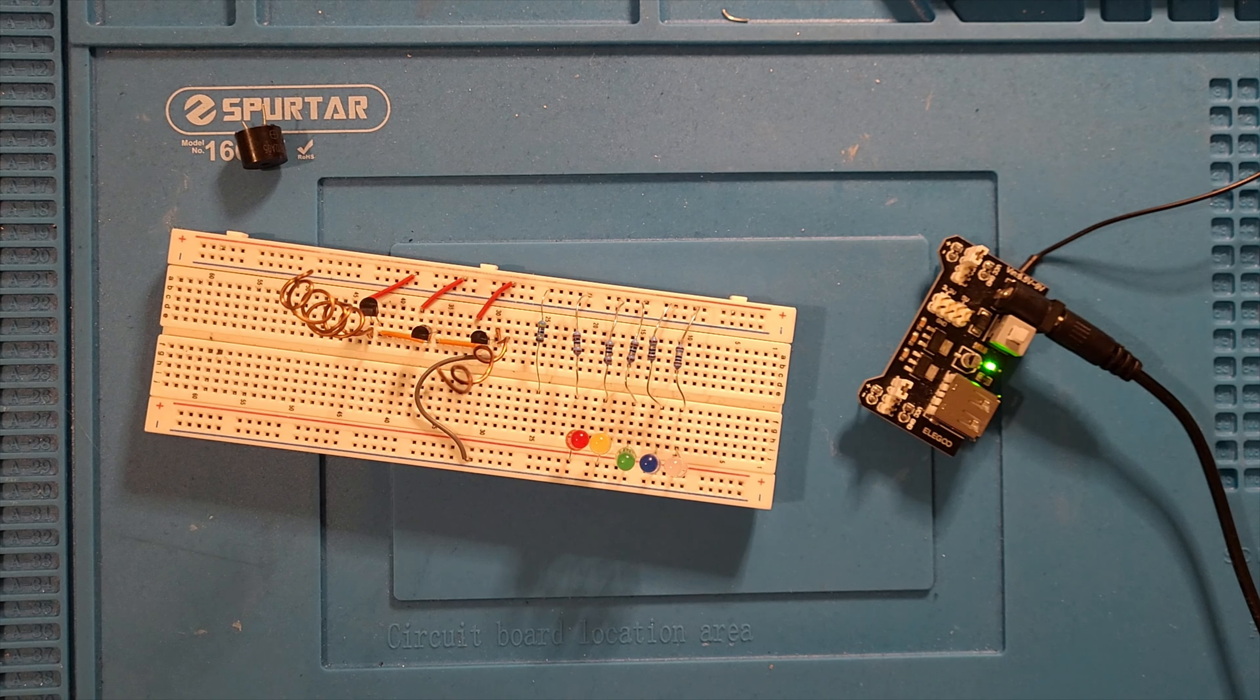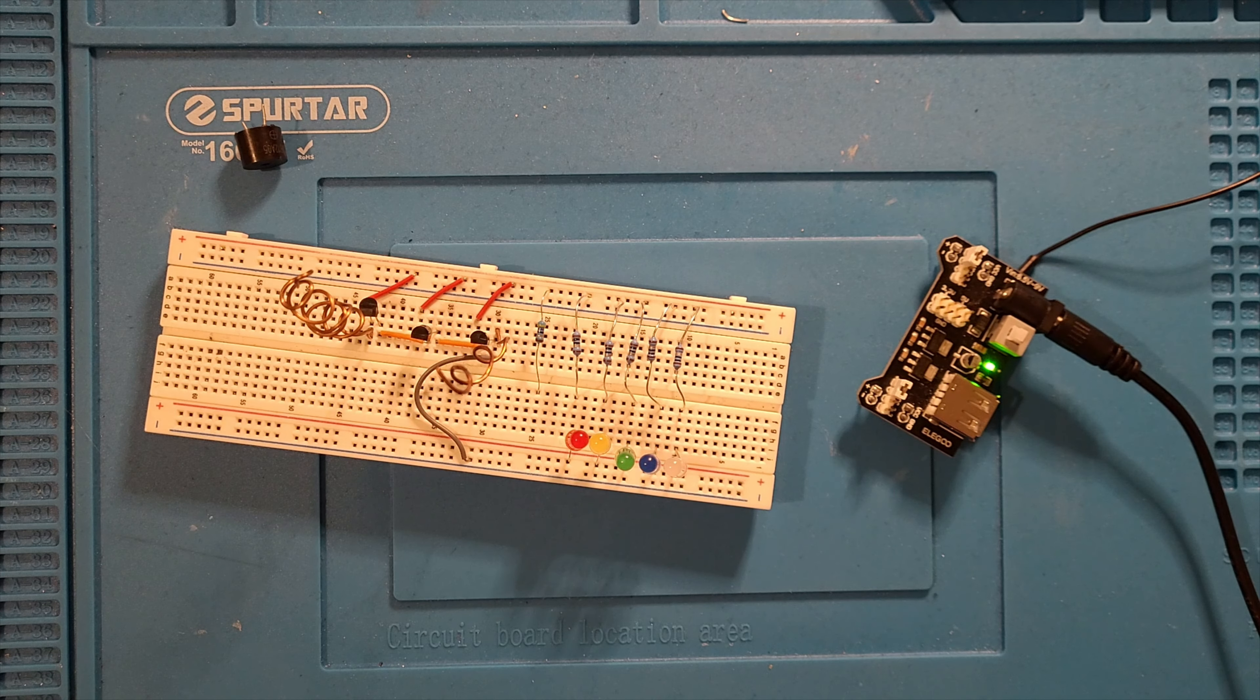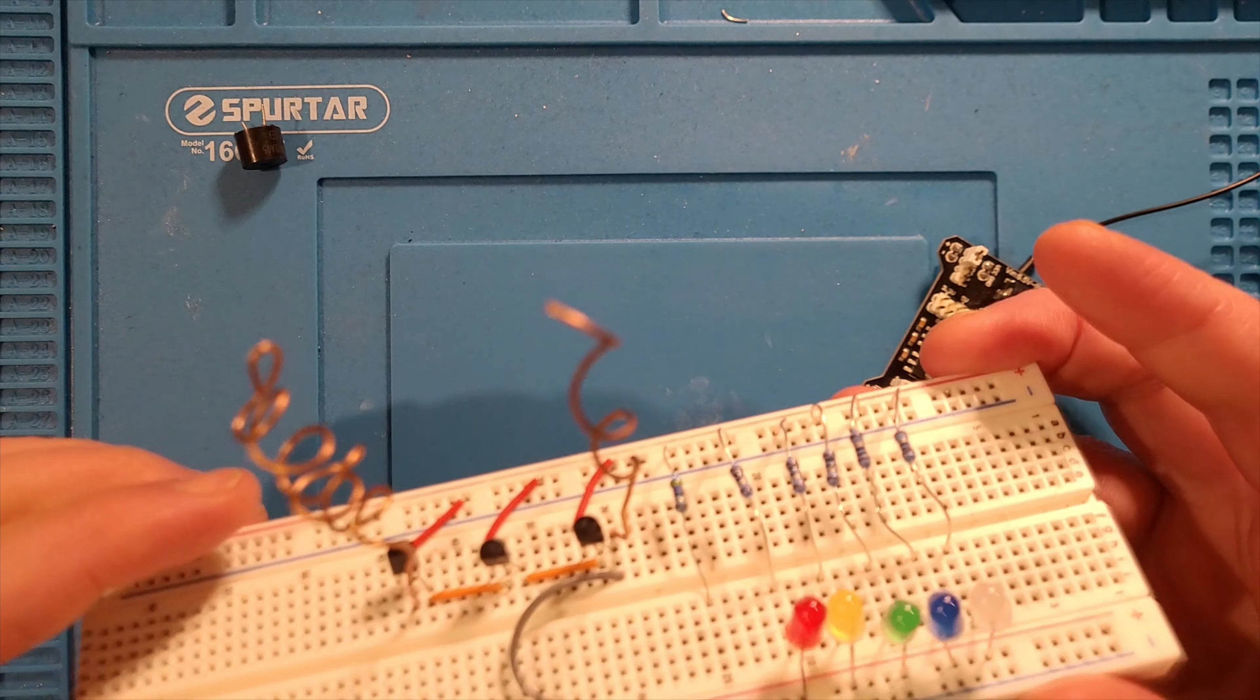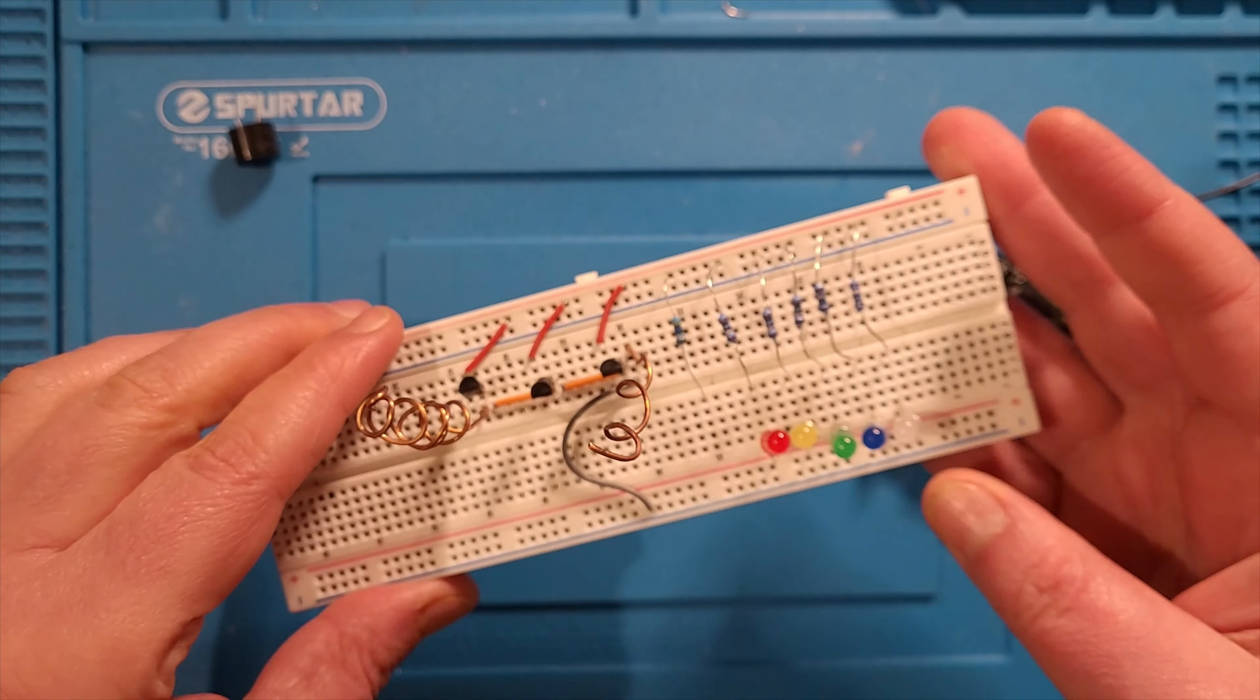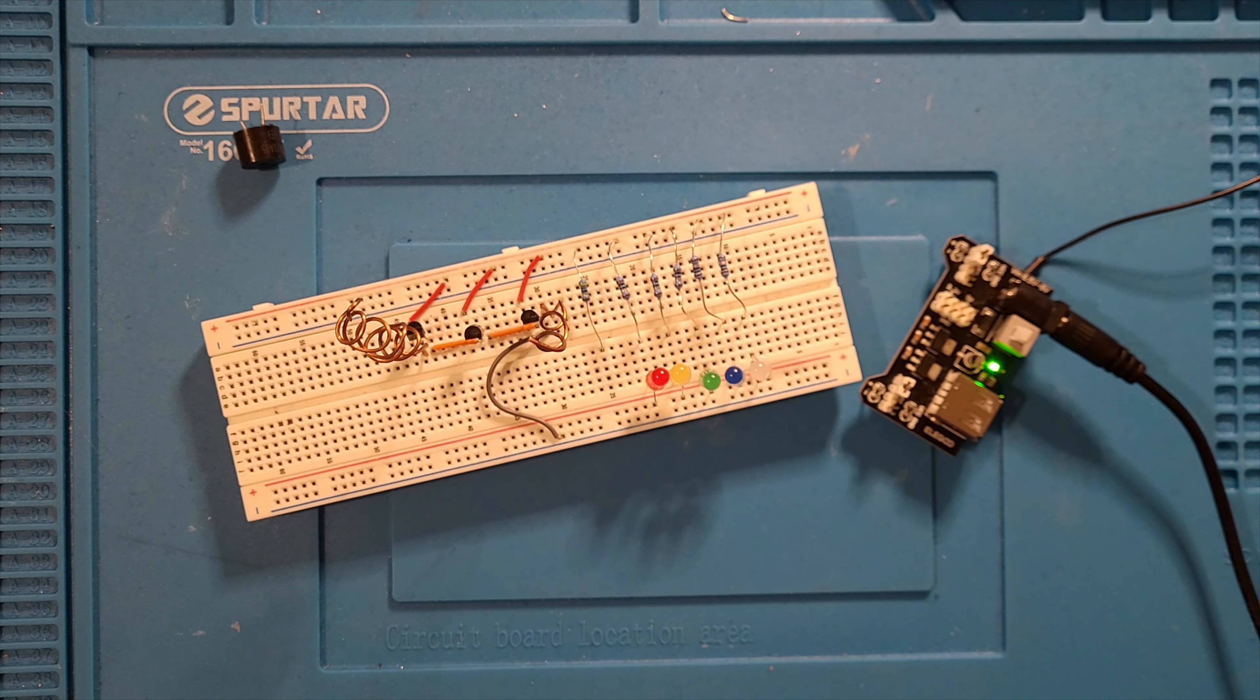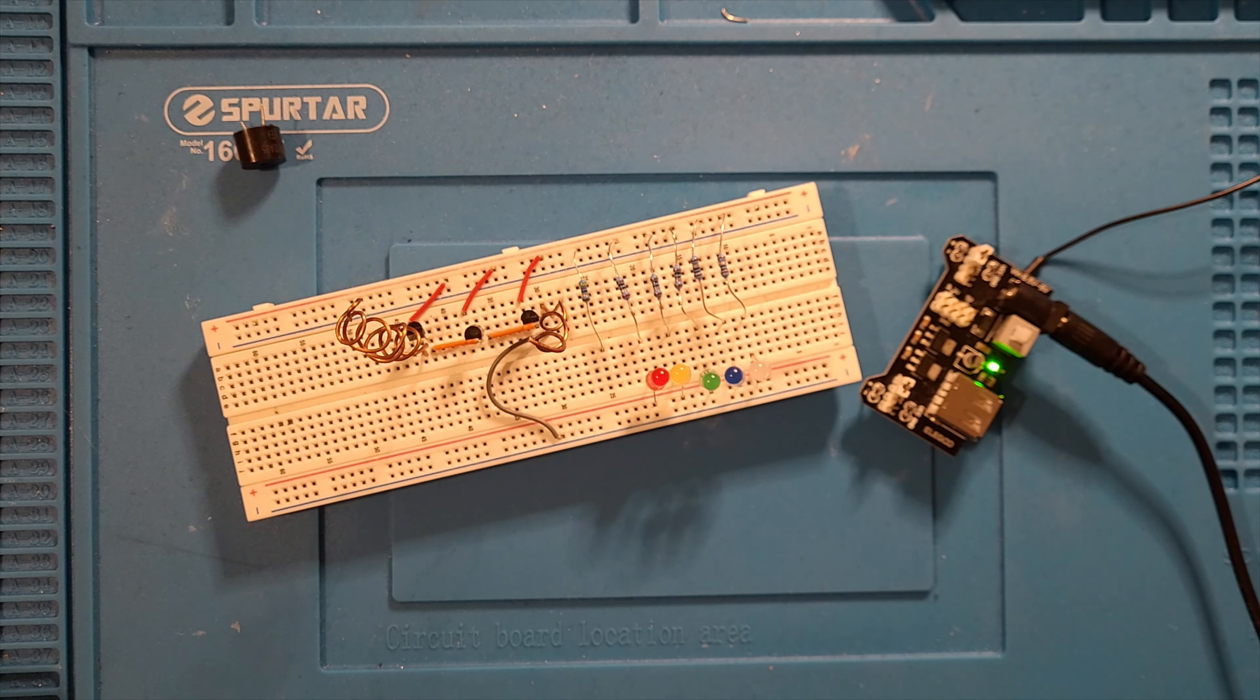Welcome back. Last week we built this REM pod ghost detector project and I've modified it a little bit. I've reduced the number of transistors from four to three, and I was previously using BC547 transistors which had an HFE of around 250. These are BC548 which have an HFE of around 300.